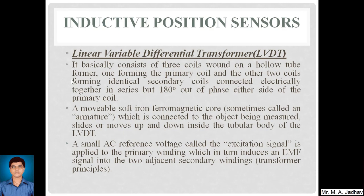The next type is inductive position sensors. We will go through the Linear Variable Differential Transformer, shortly called the LVDT. It basically consists of three coils wound on a hollow tube — one forming a primary coil and the other two forming identical secondary coils connected electrically in series but 180 degrees out of phase, on either side of the primary coil. A movable soft iron ferromagnetic core, sometimes called an armature, is connected to the object being measured and slides up and down inside the tubular body of the LVDT. A small AC reference voltage called the excitation signal is applied to the primary winding, which in turn induces an EMF signal into the two adjacent secondary windings.